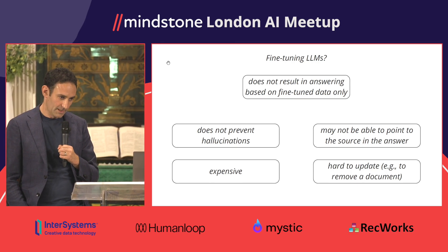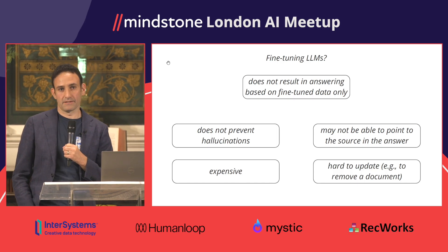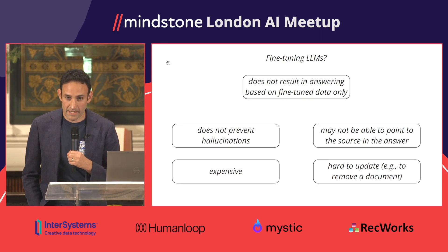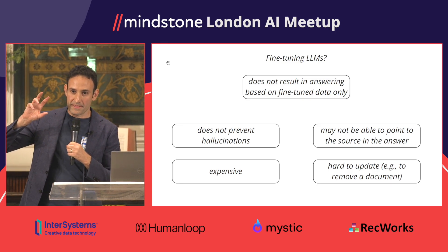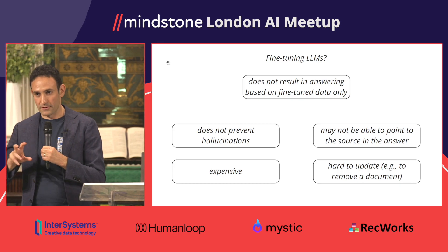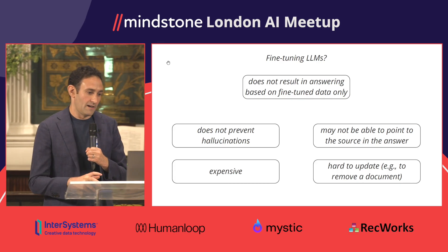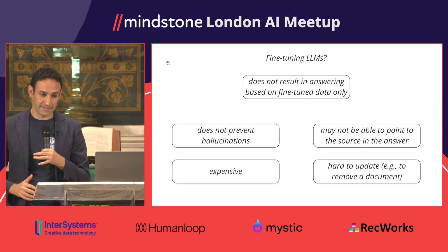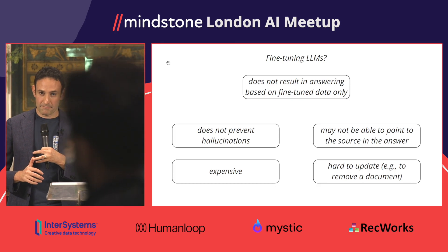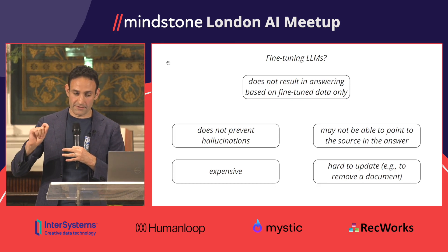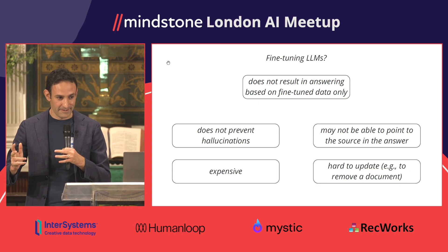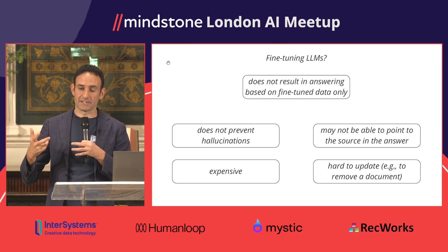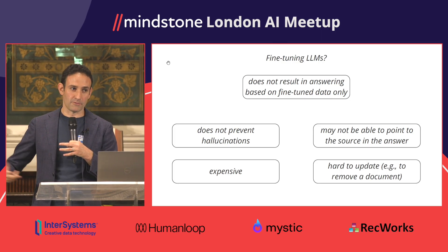What about fine-tuning an LLM instead? It would help somewhat, but it does not solve the big issues. In particular, it won't ensure the answer is generated only from your internal data. Beyond that, it does not prevent hallucinations, it may still not point you to the source used to generate the answer, it's expensive, and it's hard to update — for example, to remove a document you would pretty much have to re-fine-tune the model completely.